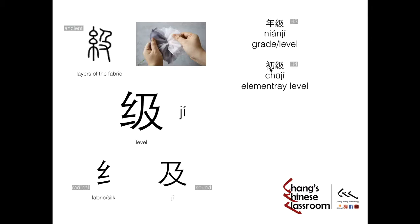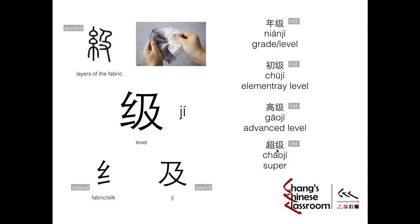Next: Chu Ji. This is a direct and natural translation — Ji means level, and Chu represents elementary. So of course the advanced level, the high level, would be Gao Ji. Gao represents high, so high level or advanced level. And last one, quite funny, in HSK level 4: Chao Ji. It exactly means super. So Chao Ji, super level — combined still means super.